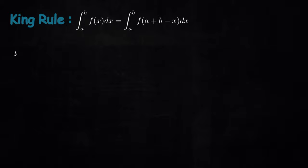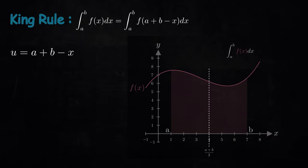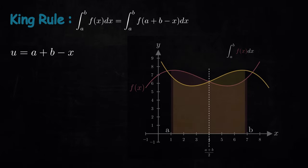So, the substitution u equals a plus b minus x captures all the information of flipping the graph about the vertical axis that is mid-way between the integral limits.